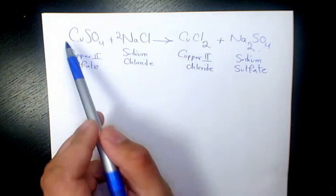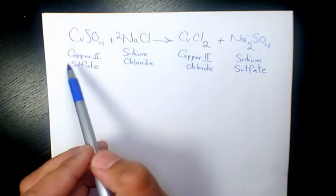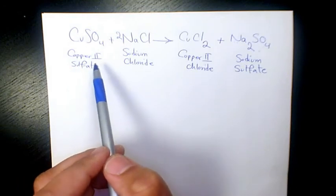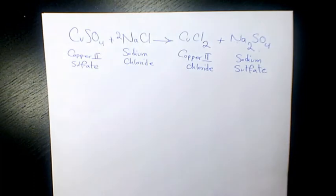For every mole of copper(II) sulfate, we need 2 moles of sodium chloride to have the stoichiometric relationship. When we have this, we get 1 mole of CuCl2 and 1 mole of sodium sulfate.